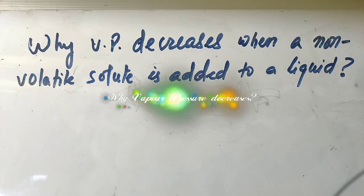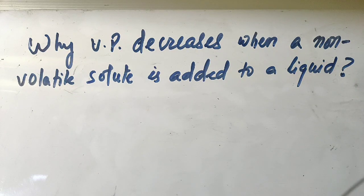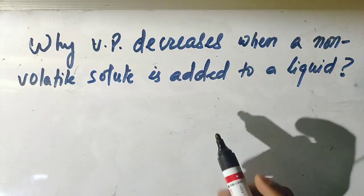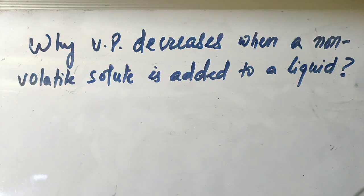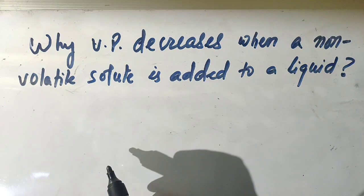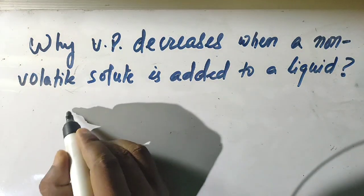Today in this video I am going to explain why the vapor pressure of a liquid decreases when a non-volatile and non-electrolyte solute is added to the liquid. I am also going to draw the graph of pressure versus temperature.